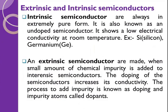Now we will understand intrinsic and extrinsic semiconductors. Intrinsic semiconductors are always in extremely pure form — they are not mixed with anything, so they are also known as undoped semiconductors. They show low electrical conductivity at low temperature. Silicon and germanium are examples of intrinsic semiconductors. Extrinsic semiconductors are made when a small amount of chemical impurity is added to an intrinsic semiconductor.